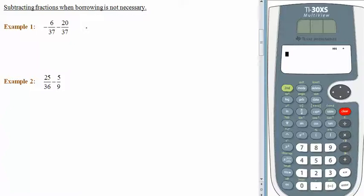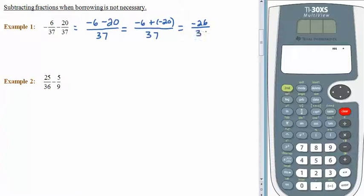Here we have negative 6 37ths subtract 20 37ths. The rules say we are going to subtract the numerators. So we have negative 6 minus 20, and keep the same denominator, 37. Just to remember that idea about subtracting being the same as adding the opposite, let's rewrite this numerator. Negative 6 plus negative 20. We have 6 negatives in the bowl, adding 20 more negatives to the bowl. That gives us negative 26 37ths.